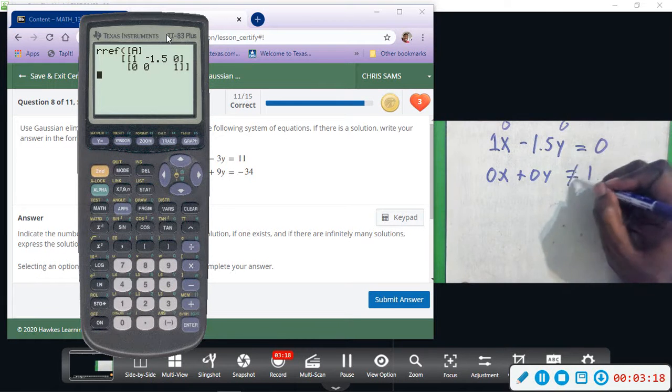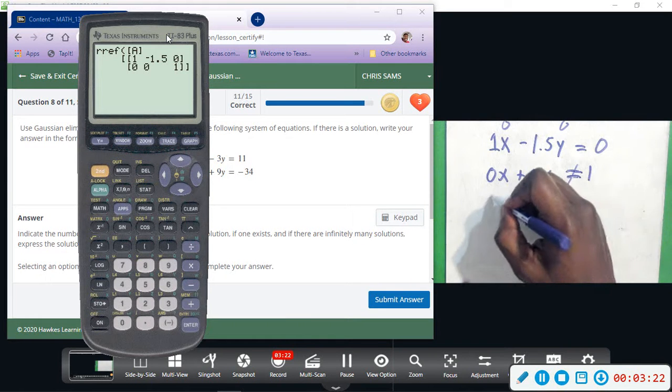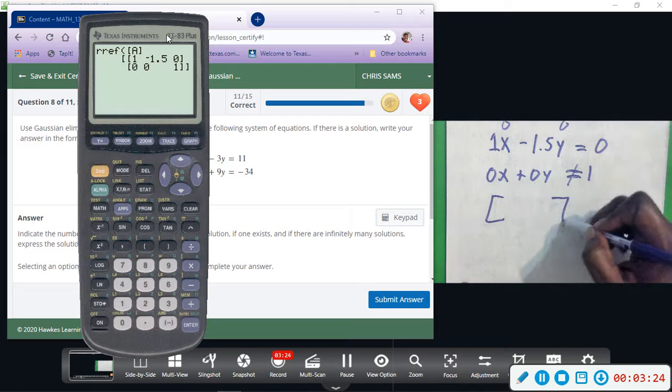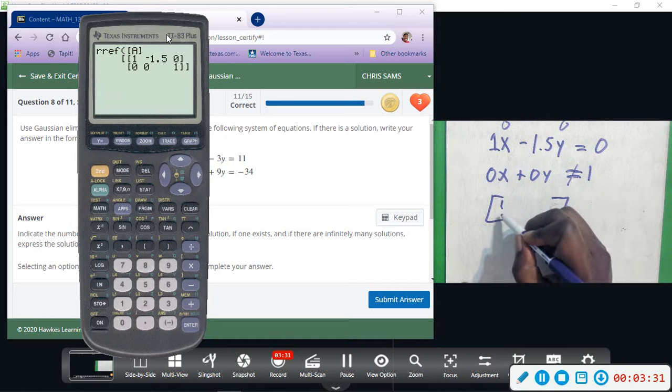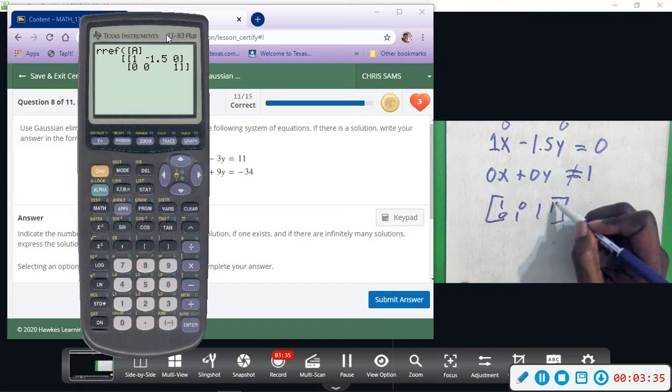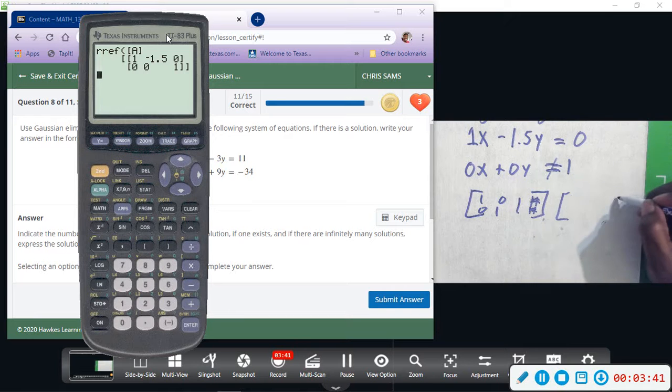So because this is not true, when you see something like that in this matrix, you have three scenarios. You'll have the case where you get 1, 0, and 0, 1, and some numbers—that gives you one solution.